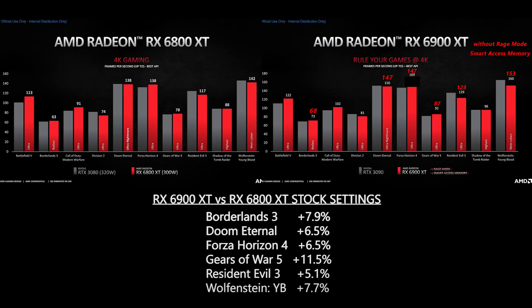I think it was always going to be hard to reach the full theoretical 10% performance difference, because there are always bottlenecks. For example, both cards use the same 256-bit bus but the 6900 XT has more compute units, so you'll always get slightly less than the theoretical gain. So overall, 8% is honestly not too bad — the expectation was maybe 10%, but it's a pretty good result.